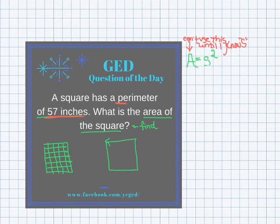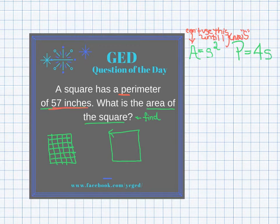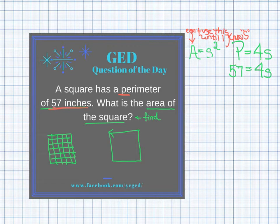The perimeter of a square formula is p equals 4s. We know the perimeter is 57, so I write 57 in place of p: 57 equals 4s. Now I'll be able to solve for s.